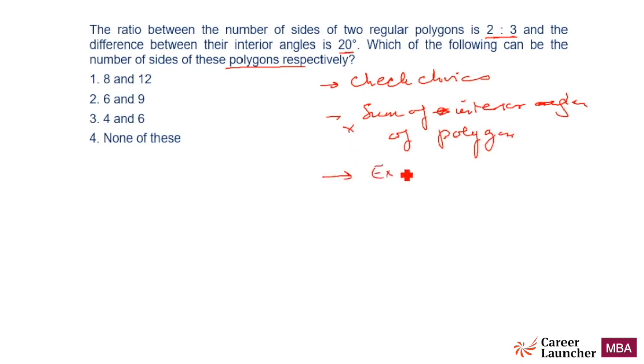To me this is a simpler formula and secondly the difference has to be 20, that means both of those angles should be integers. Both of the angles should be such that n is a factor of 360.